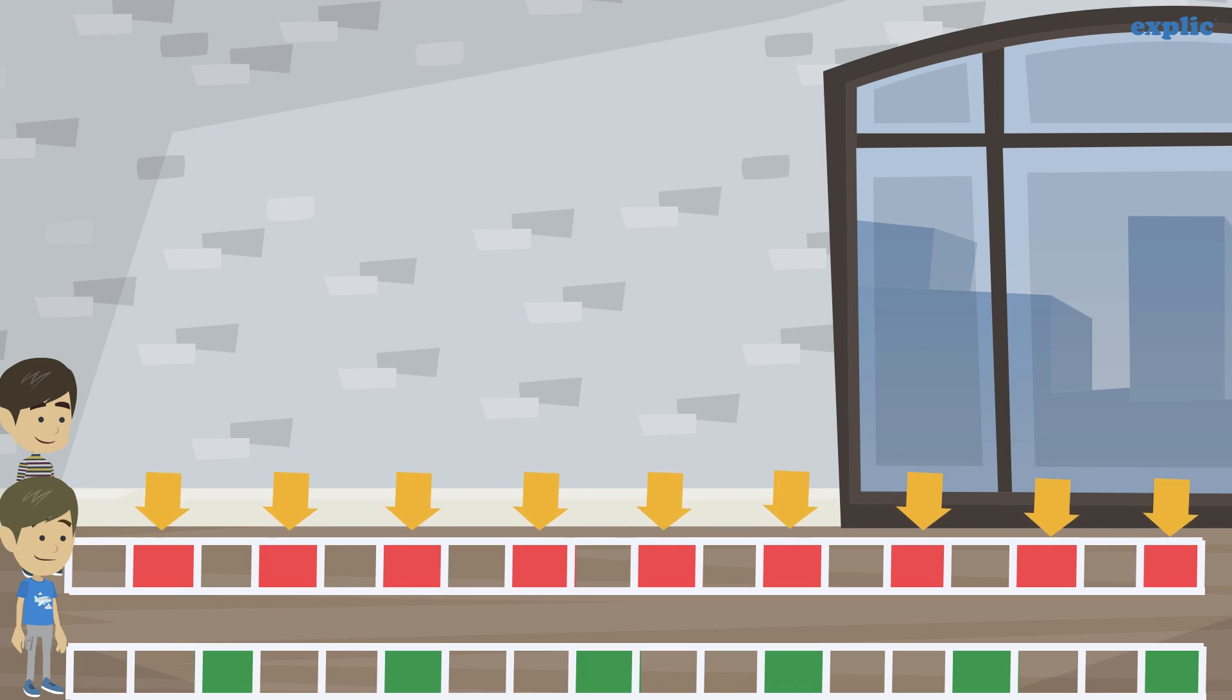Whereas, Sid can hop on every third square, marked in green. Let's see on which squares they are meeting.